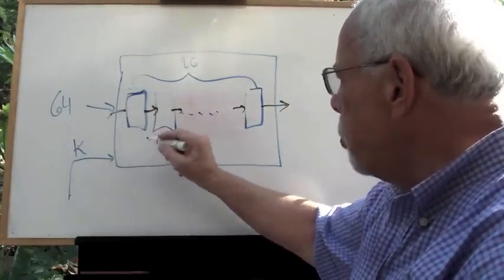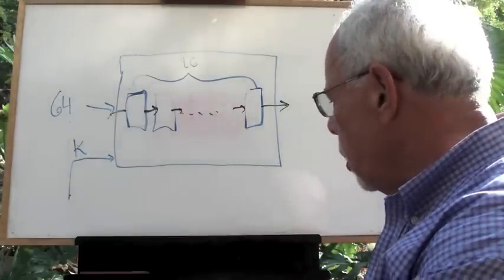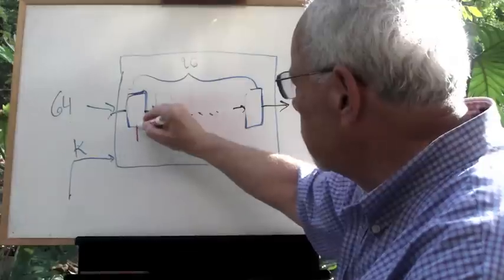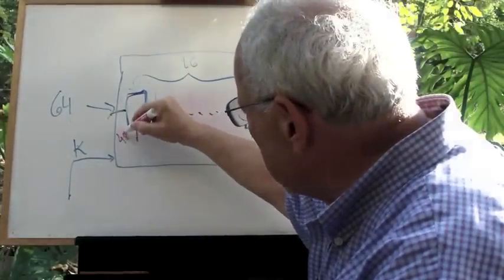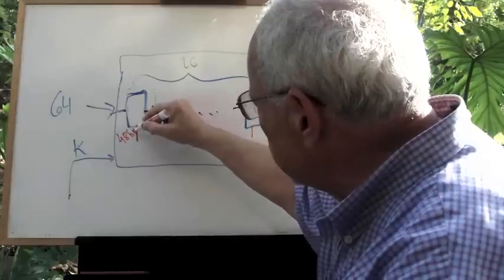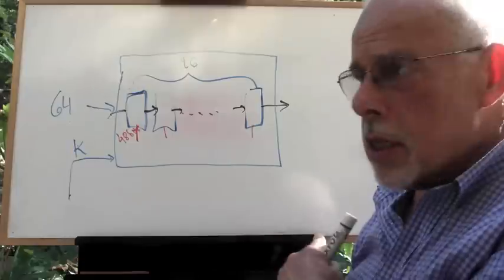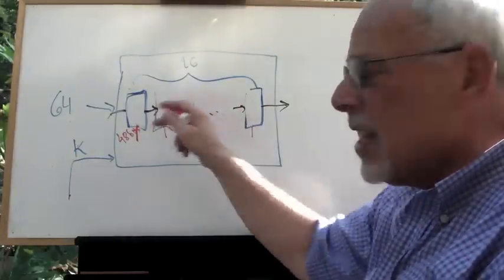Now each of those 16 modules have an input which is a key. And the key that comes here to each of those boxes is a 48-bit key.